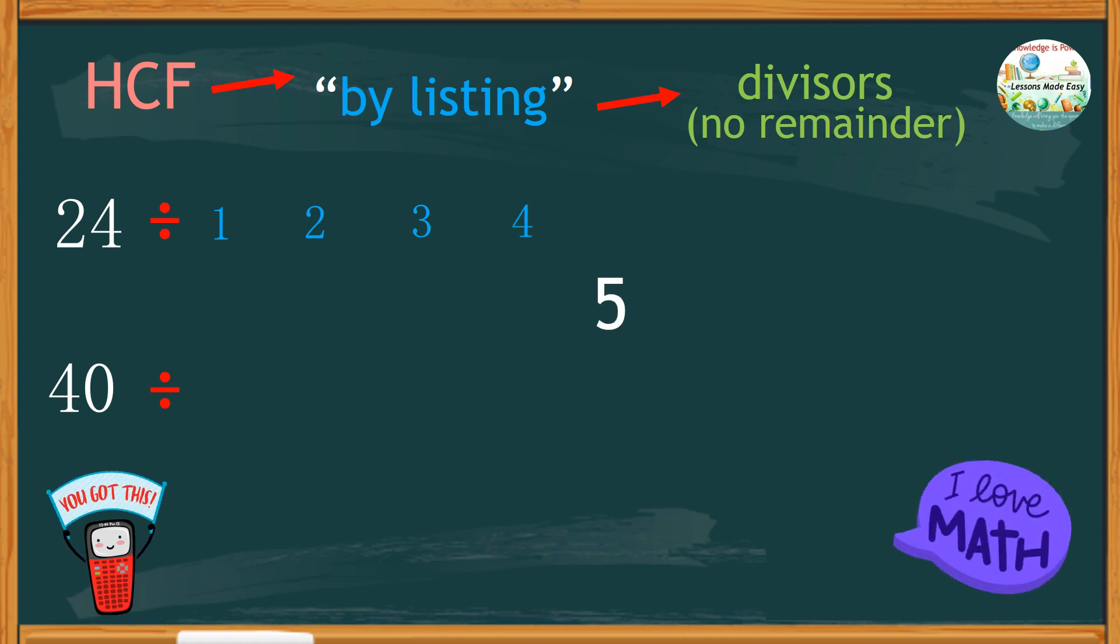How about 5? If we divide 24 by 5, we'll get 4 remainder 4. So 5 is not a factor of 24. Moving on to 6, which exactly divides 24 with no remainder. 8 is fine too. Even 12. And of course, 24 itself. So the factors of 24 are 1, 2, 3, 4, 6, 8, 12, and 24 itself.